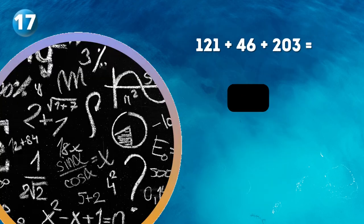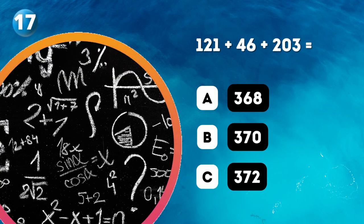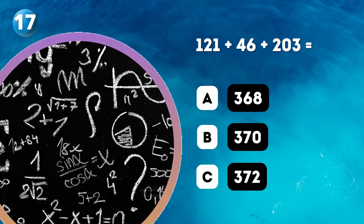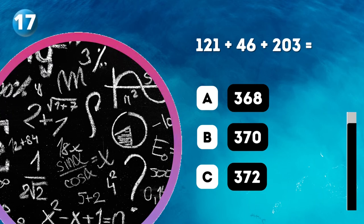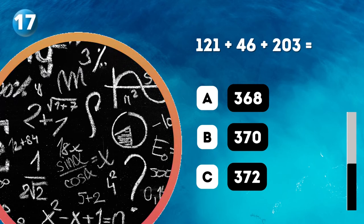Question 17. 121 plus 46 plus 203 equals: A. 368, B. 370, C. 372.